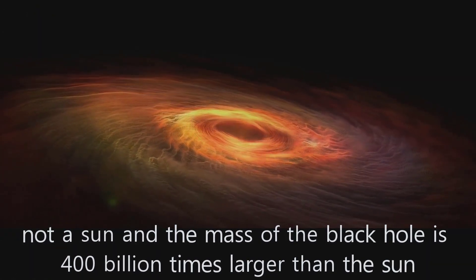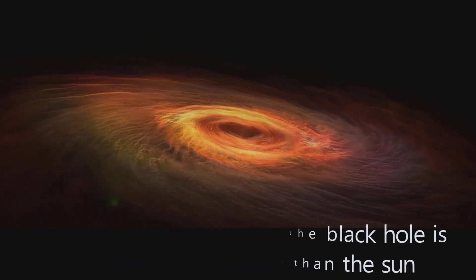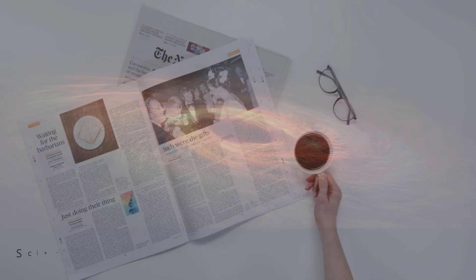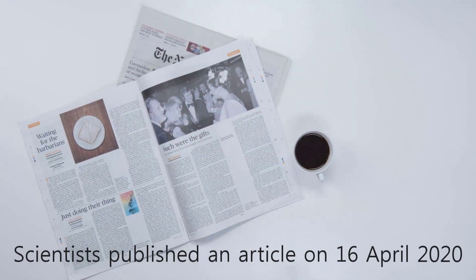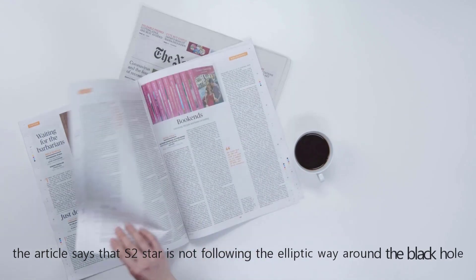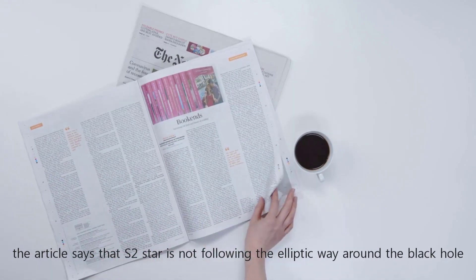The mass of the black hole is 400 billion times larger than the Sun. Scientists kept observing the S2 star and they published an article on April 16, 2020. The article says that the S2 star is not following the elliptic way around the black hole.